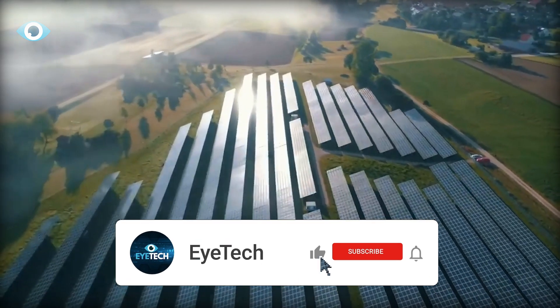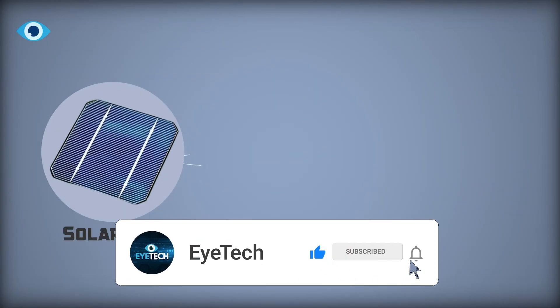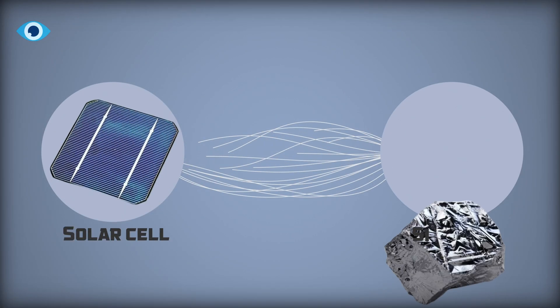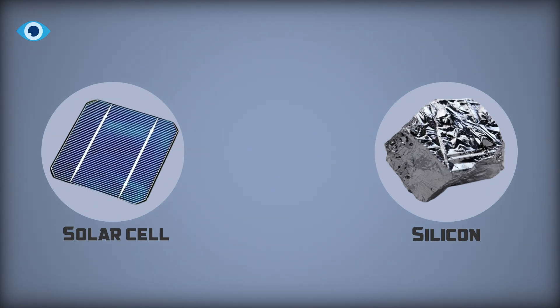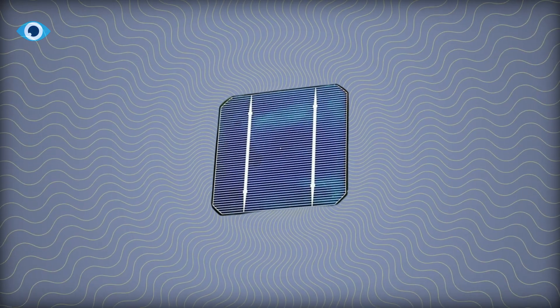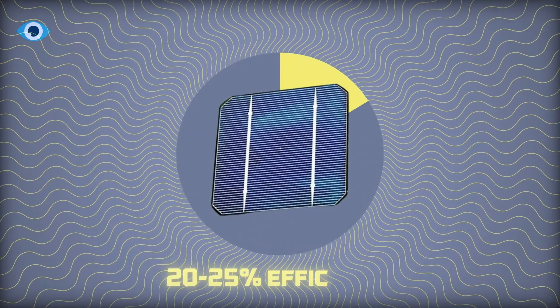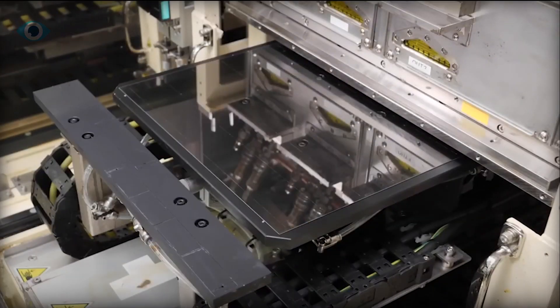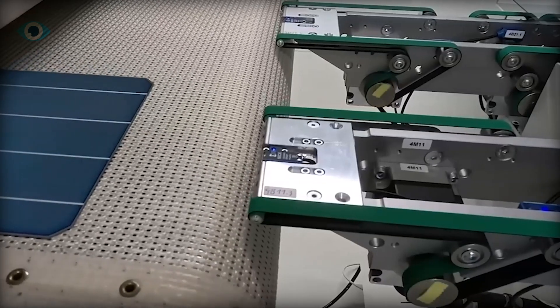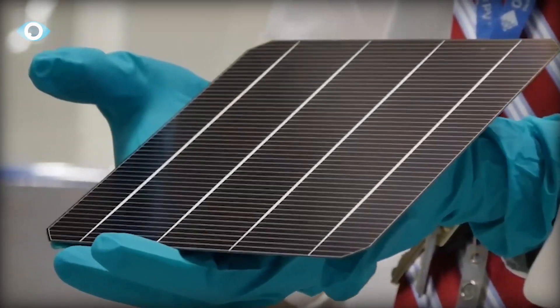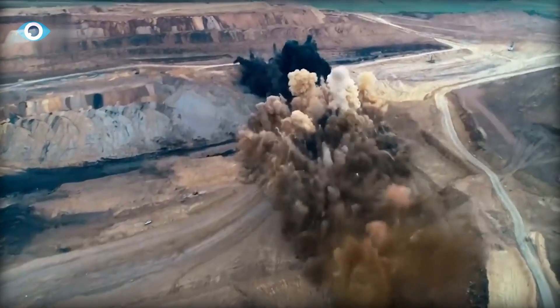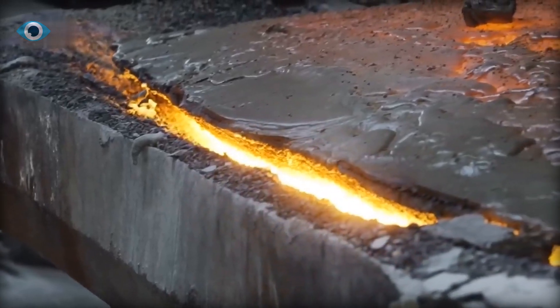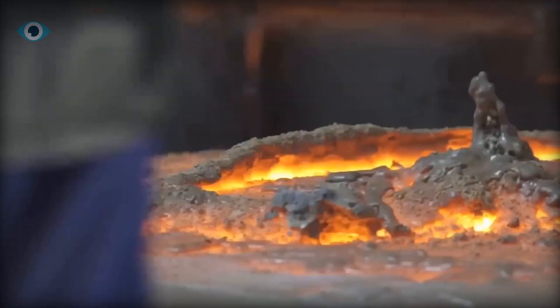But why the need for such innovation? Traditional solar cells, predominantly crafted from silicon, falter in efficiency, capturing only a fraction—about 20 to 25%—of sunlight's potential energy. Moreover, the manufacturing process for silicon cells is arduous, requiring extensive mining and energy-intensive purification procedures exceeding 1,000 degrees Celsius.